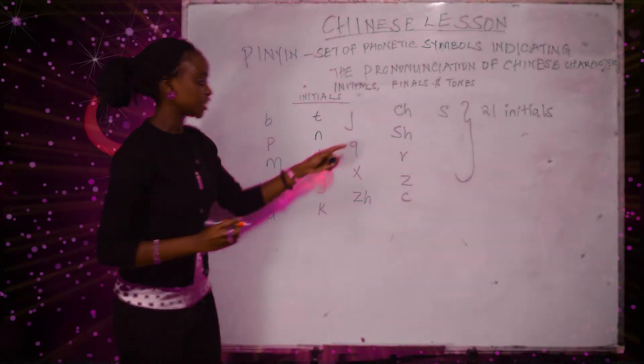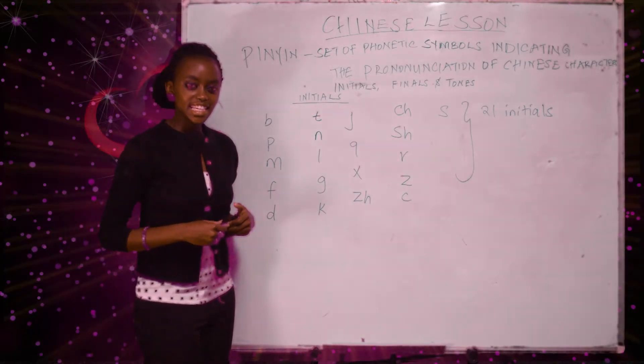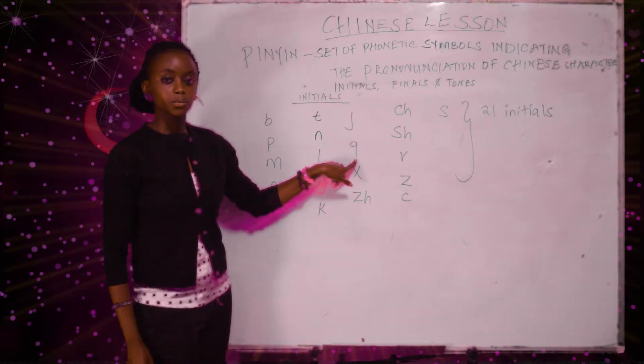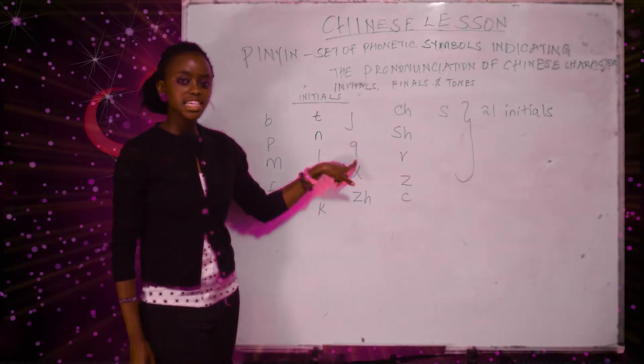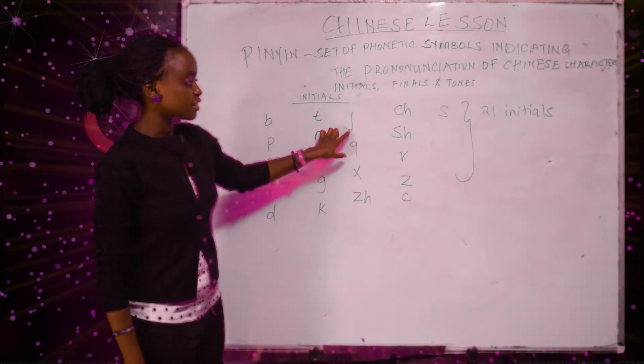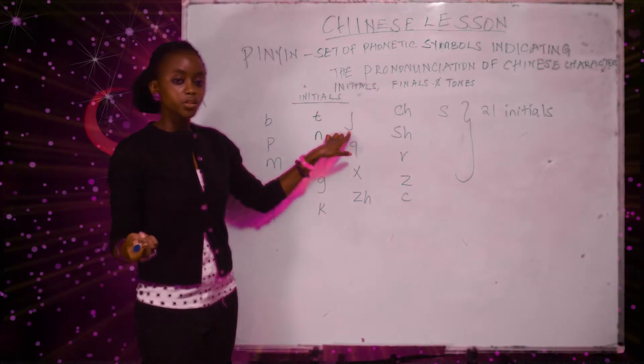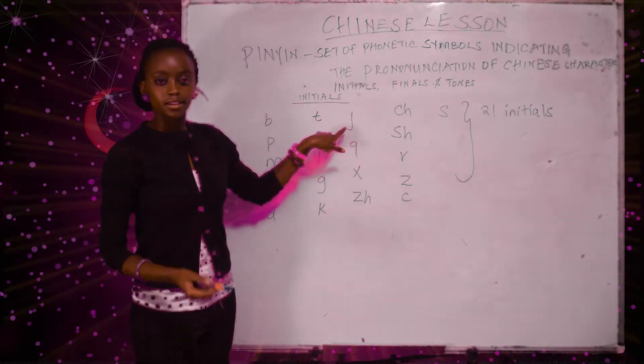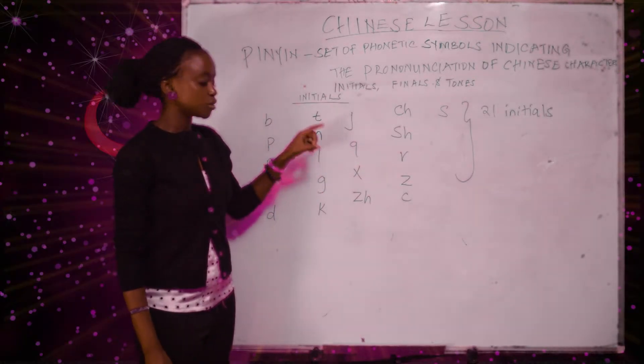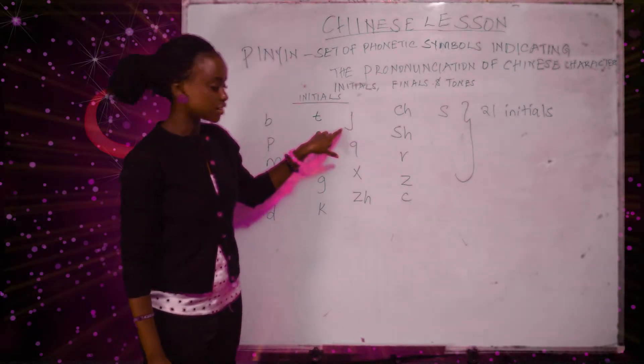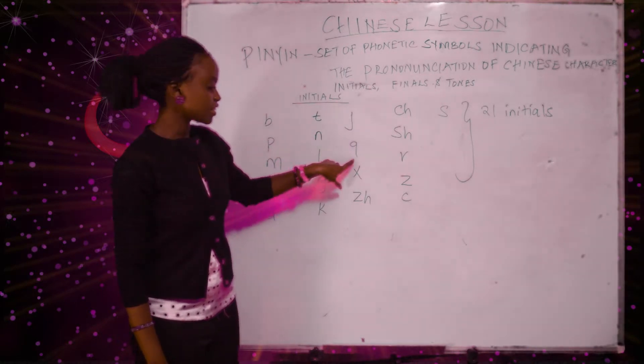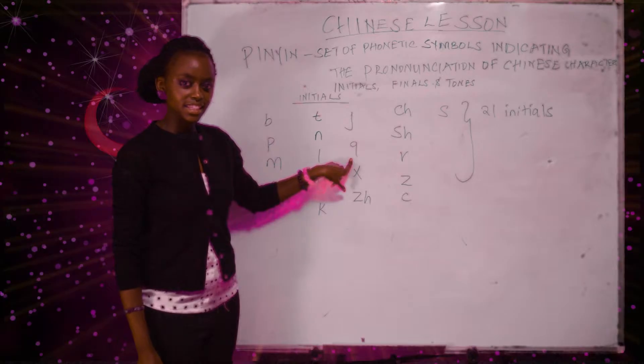Here we have the J, which is ji, ji. The next one is the Q. You pronounce it as chii, chii. Don't confuse as you pronounce chii. Don't confuse as you also try to pronounce the J. Sometimes people confuse. They may want to pronounce chii but they mean J. So please, please try to be keen. The J is ji, ji, and the Q is chii, chii.